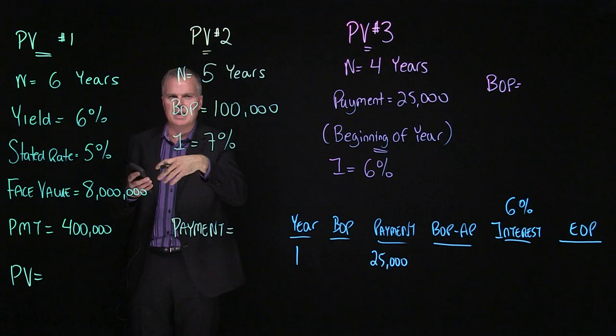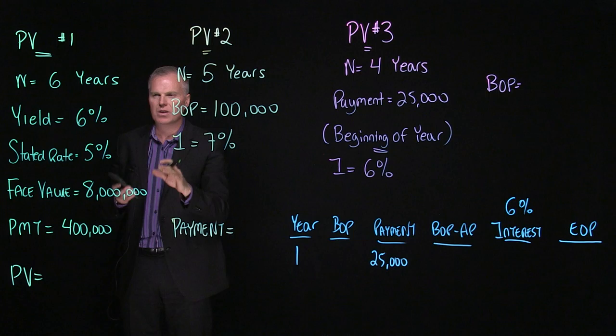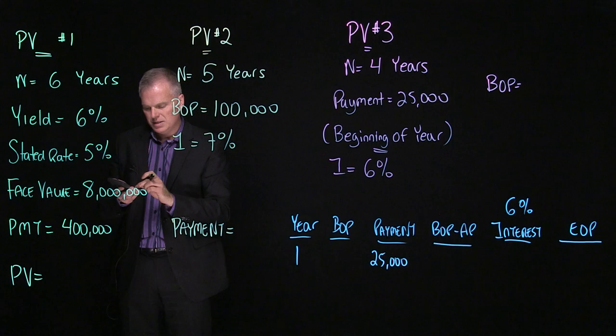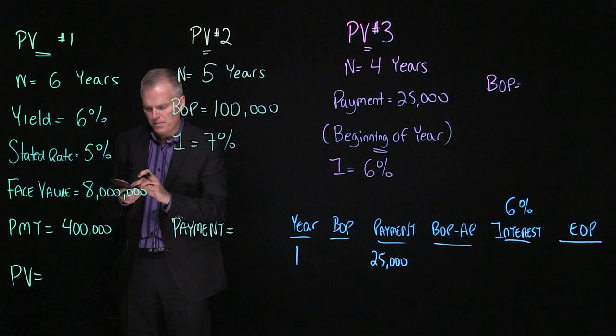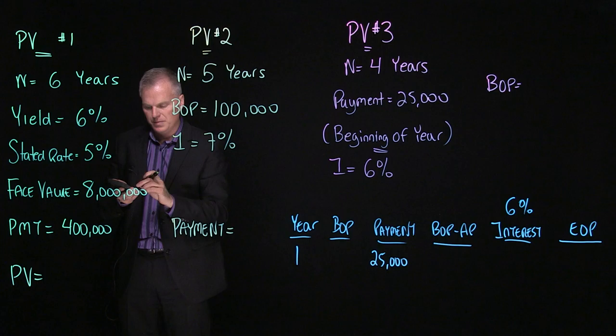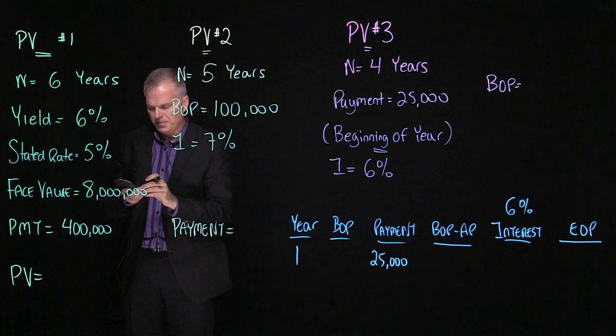I also want to make sure I don't have BGN on the top of my numbers, my decimals, because I want to make sure that this calculation occurs as an end of the period type of calculation. And then now I simply just enter in the information. So 6N, 6IY, 400,000 payment, 8 million future value, because we're calculating the present value.